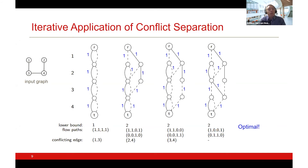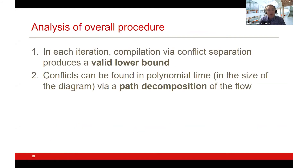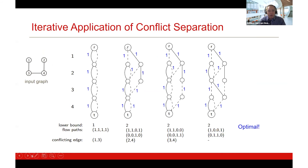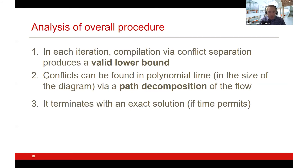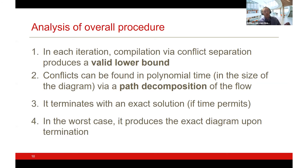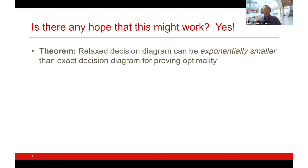The procedure gives a valid lower bound at each stage. Conflicts can be found using a standard path decomposition of the flow, achievable in polynomial time. We get an exact solution if we run all the way, but there is also hope that relaxed diagrams work better. In fact, there exists an instance class for which the relaxed decision diagram is exponentially smaller than the exact one needed to represent all independent sets.